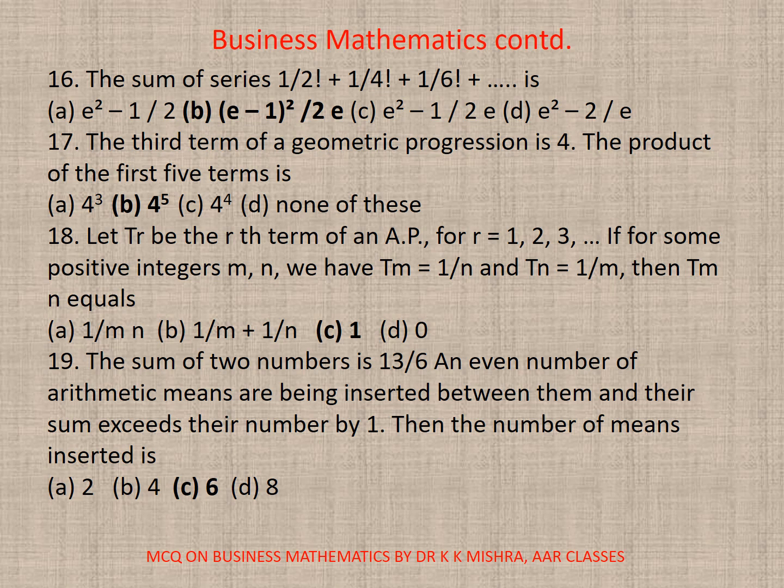Question 18. Let TR be the R-th term of an AP for R is equal to 1, 2, 3, N. For some positive integers M, N, we have TM = 1/N and TN = 1/M, then TMN equals, here correct option is C, 1.